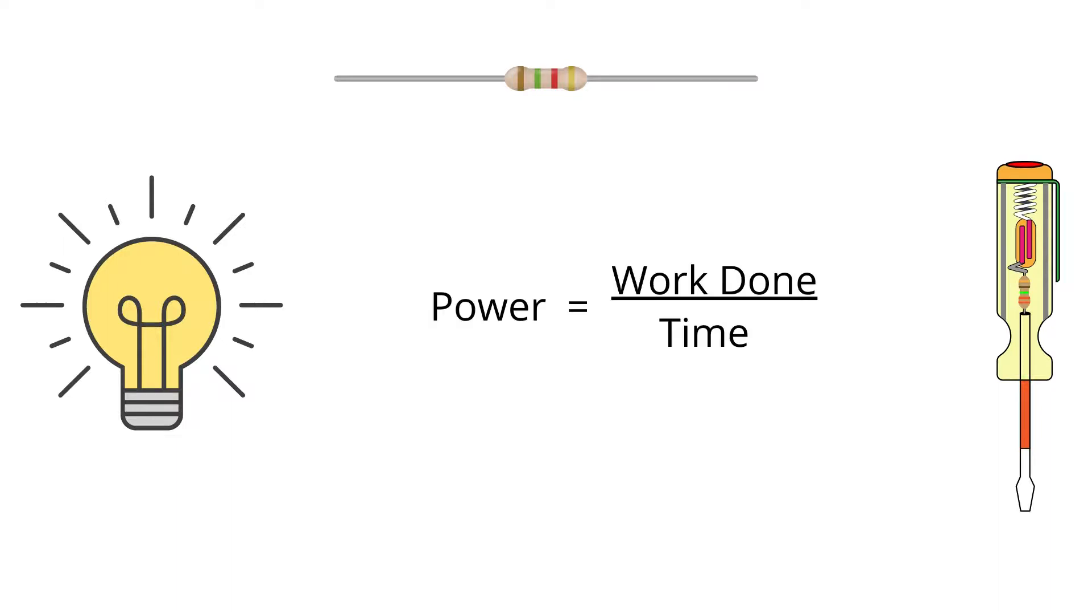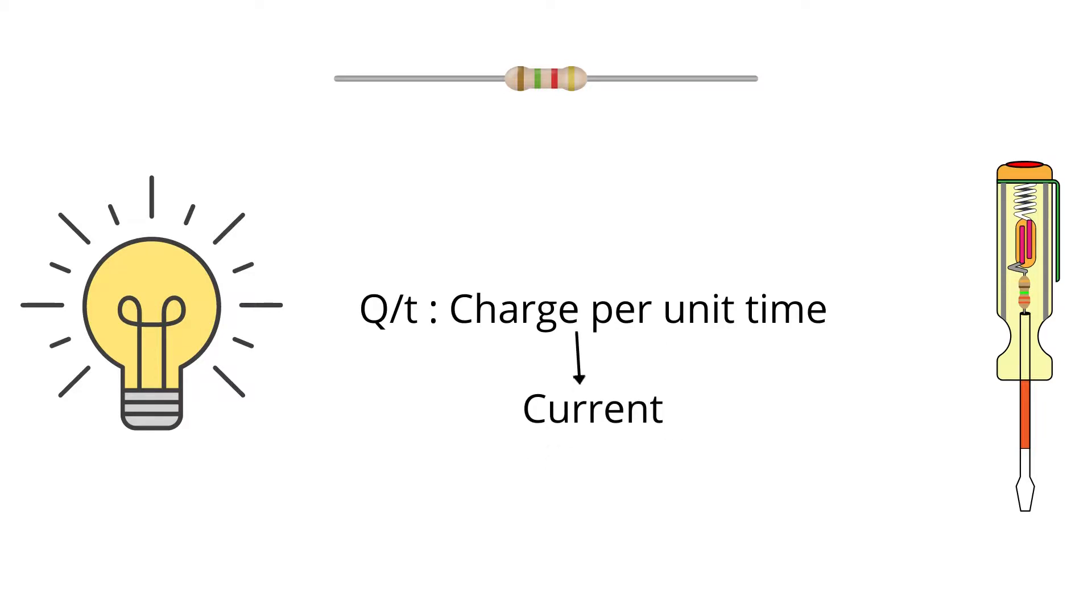Putting this in the earlier equation of power in place of work done, we get P equals V multiplied by Q divided by T. Now Q by T is charge per unit time, which we know is the definition of current from our previous topics.